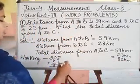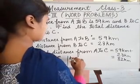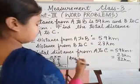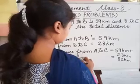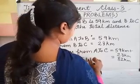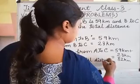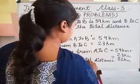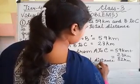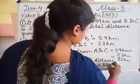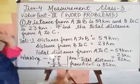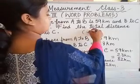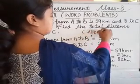Or we can make an answer statement also, writing this first statement again. We will write that answer here, total distance from A to C is 82 km. Now this was your word problem of addition.